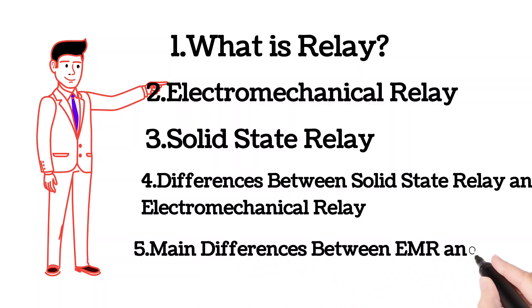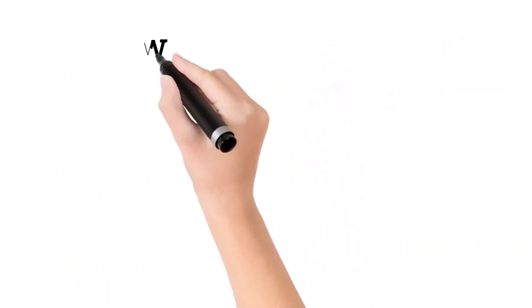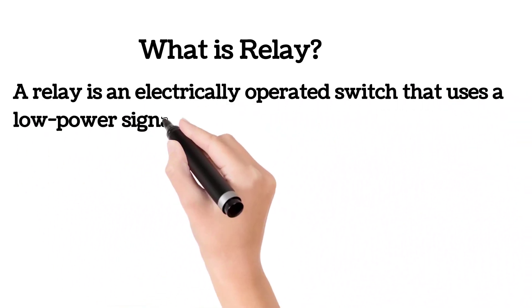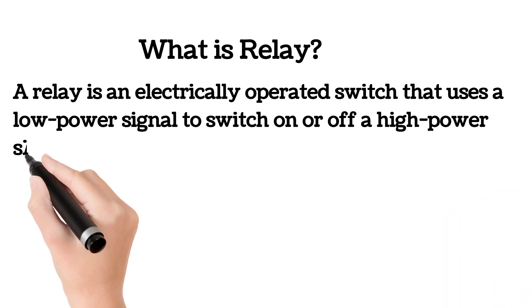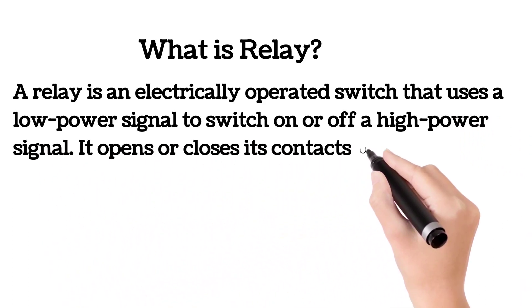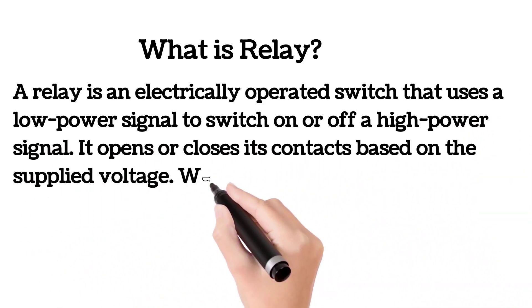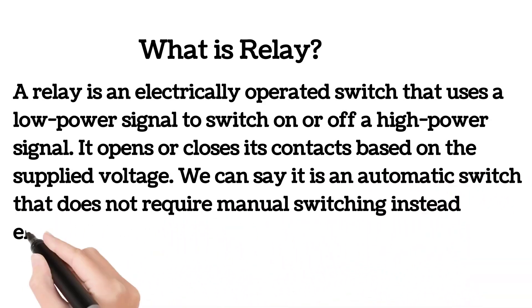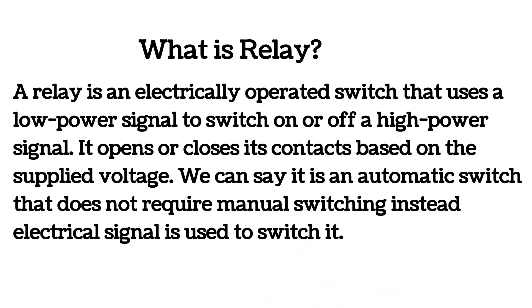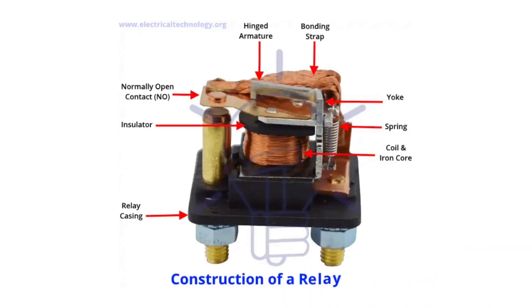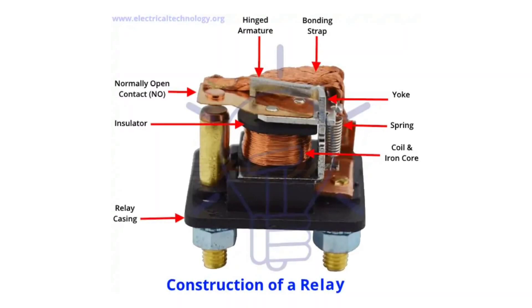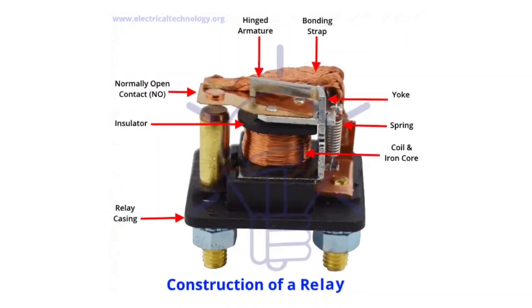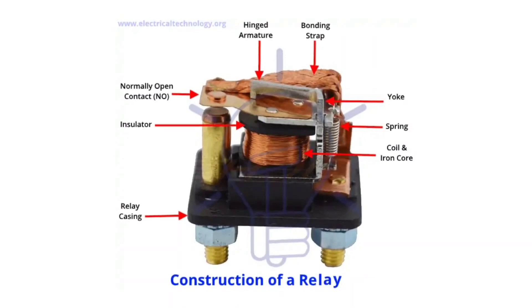What is a relay? A relay is an electrically operated switch that uses a low-power signal to switch on or off a high-power signal. It opens or closes its contacts based on the supplied voltage. We can say it is an automatic switch that does not require manual switching; instead, an electrical signal is used to switch it. There are several types of electrical relays used mainly for automatic switching of high-power circuits. The two main types are electromechanical and solid-state relay.